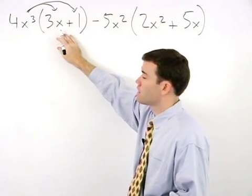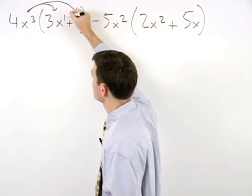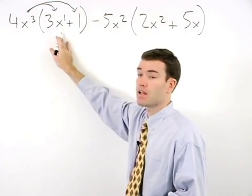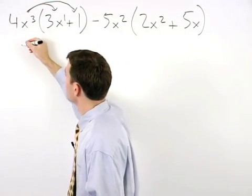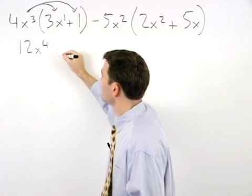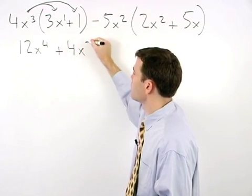think of 3x as 3x to the first, and multiplying our coefficients and adding the exponents we have 12x to the fourth plus 4x to the third.